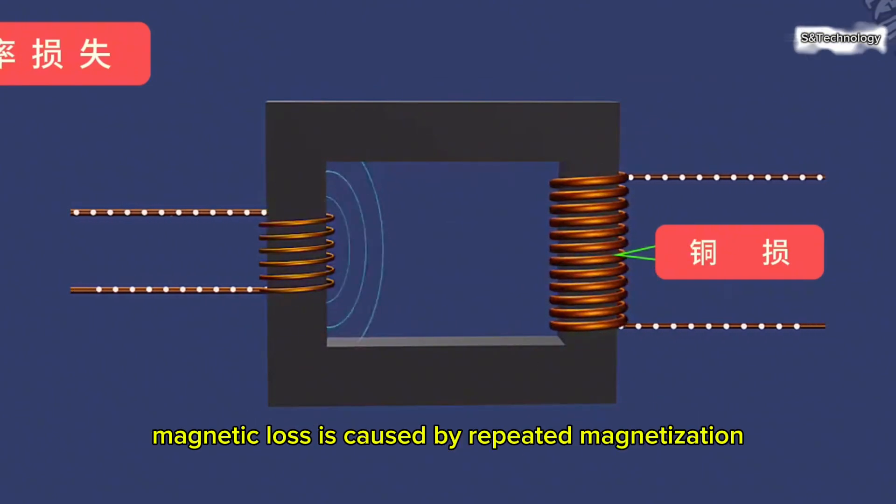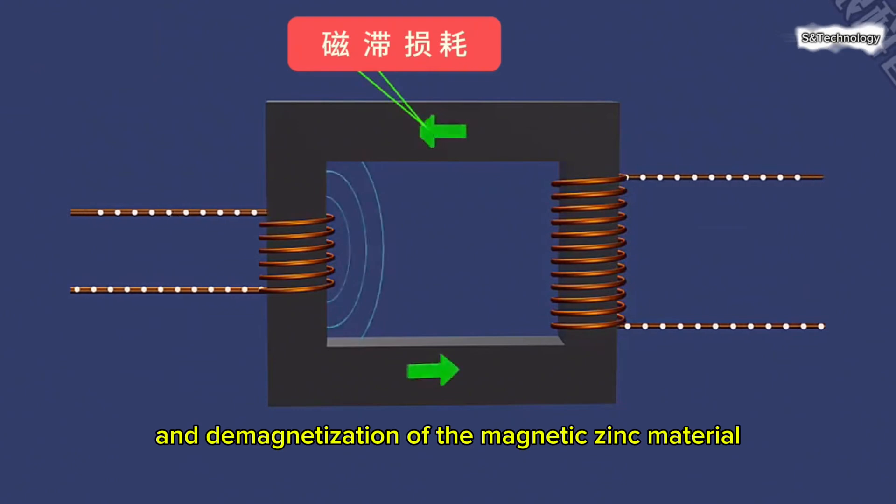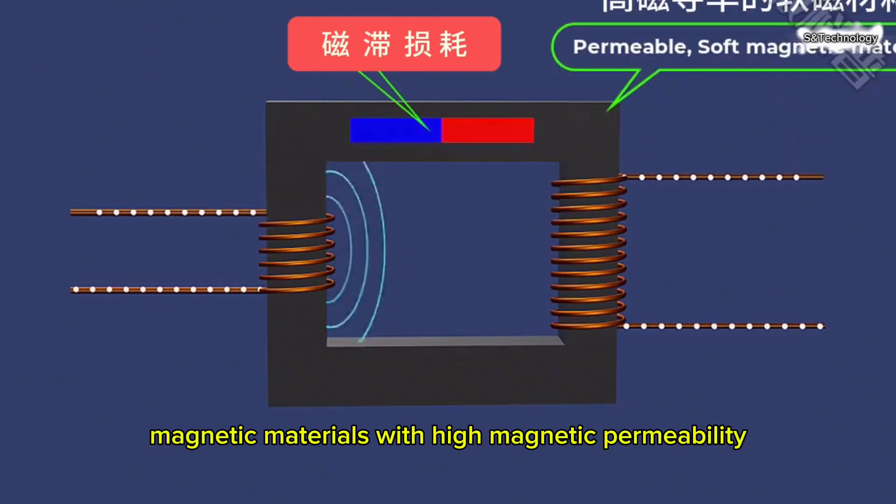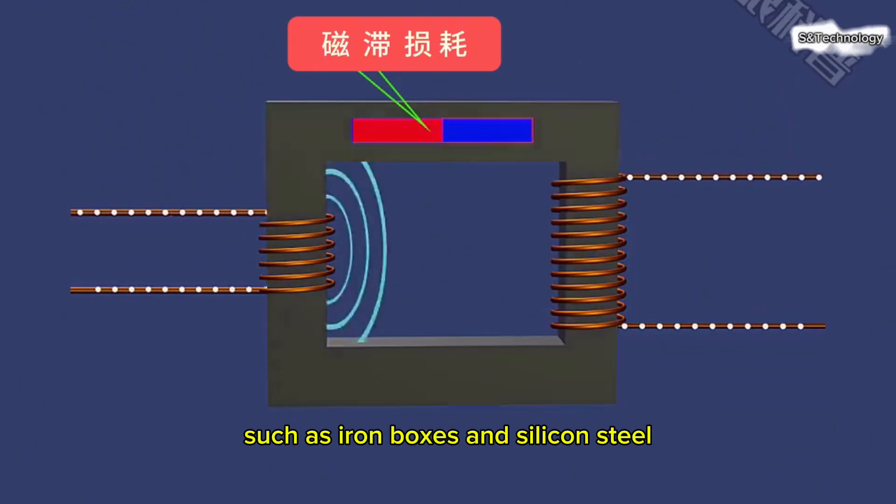Magnetic loss is caused by repeated magnetization and demagnetization of the magnetic core material. It can be eliminated by using soft magnetic materials with high magnetic permeability, such as iron alloys and silicon steel.